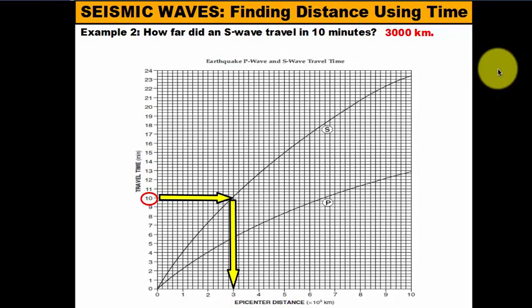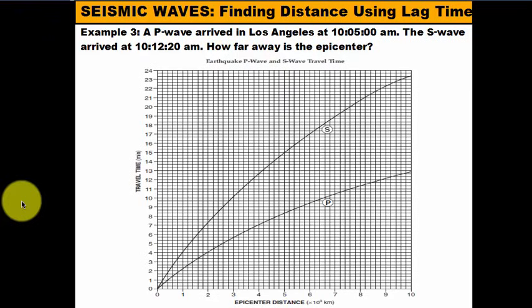Go ahead and pause to answer those practice questions. Now let's get to something a little more tricky: the lag time. What we're going to do is find distance using lag time. Lag time is the time that passes between the arrival of the P-wave and the arrival of the S-wave. For you video gamers out there — you know what lag is. If you're playing a game and you hit a key and a lot of time passes before your character reacts on screen, you'd say it's really laggy. Same principle here: lag time is the delay between the arrival of the P-wave and then the arrival of the S-wave.